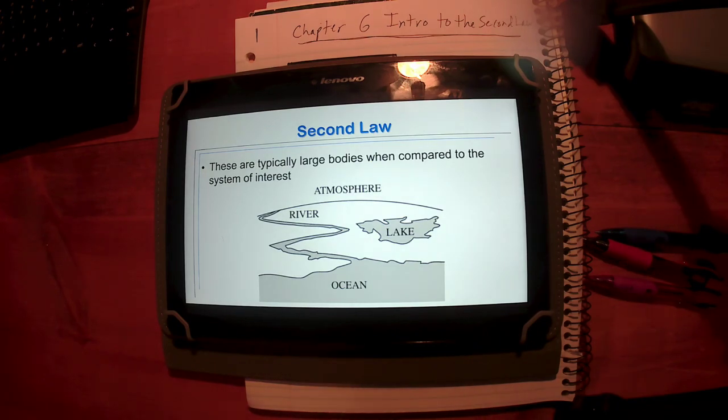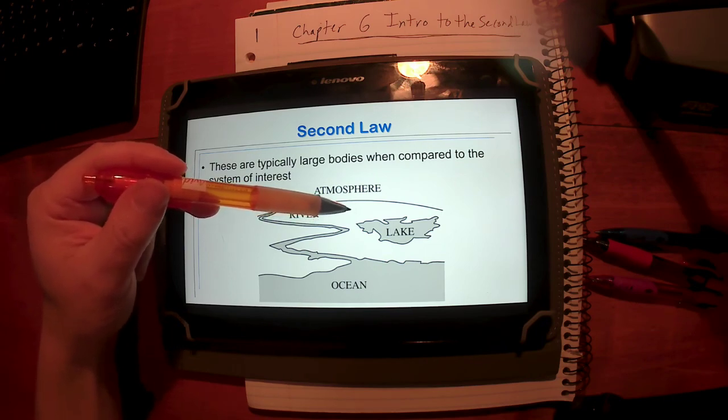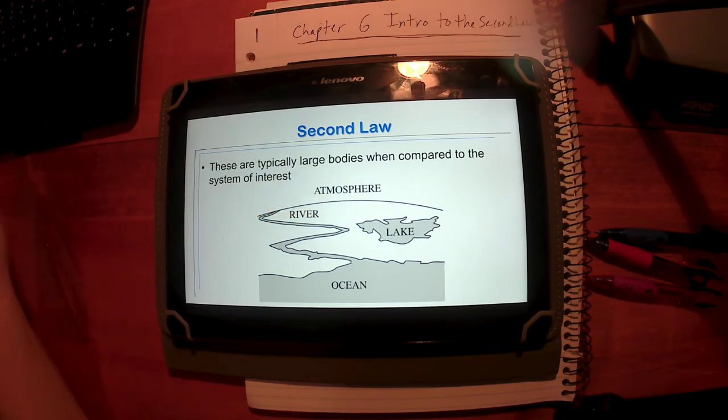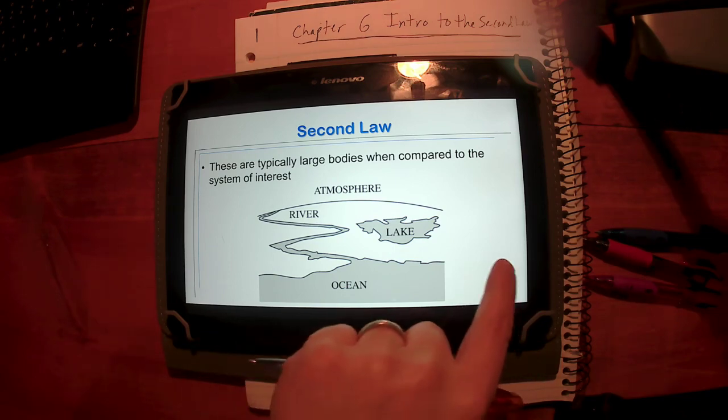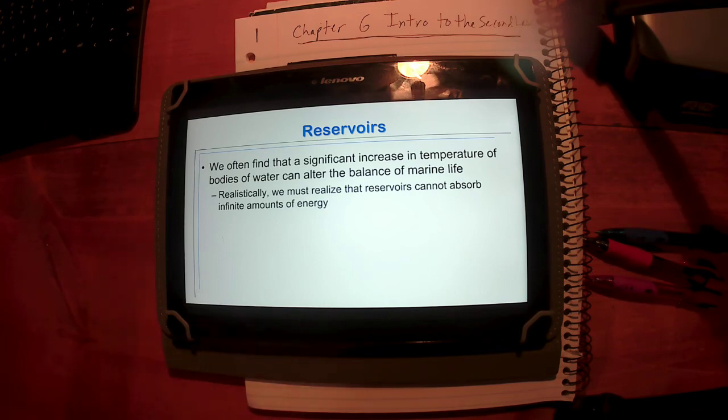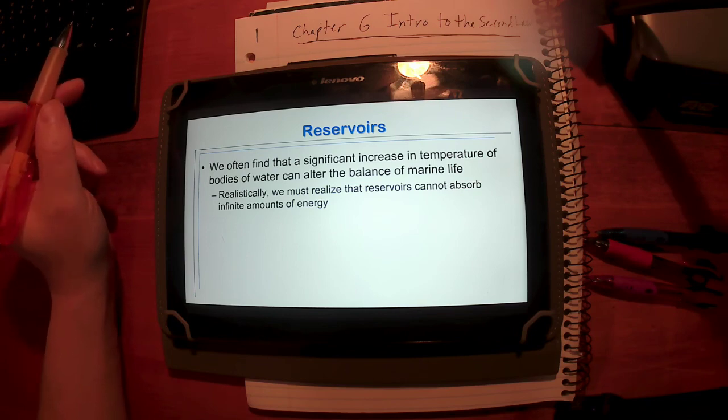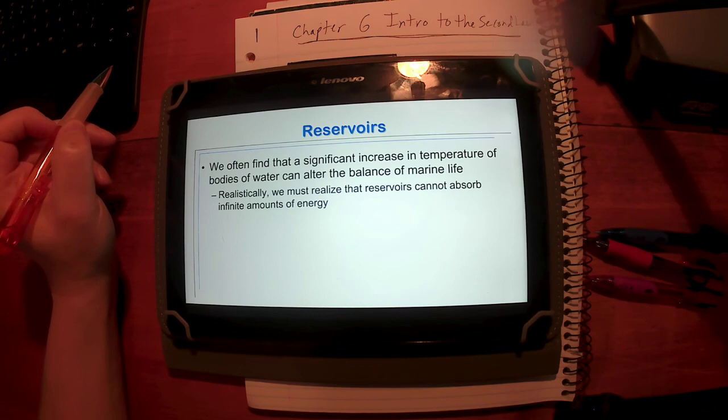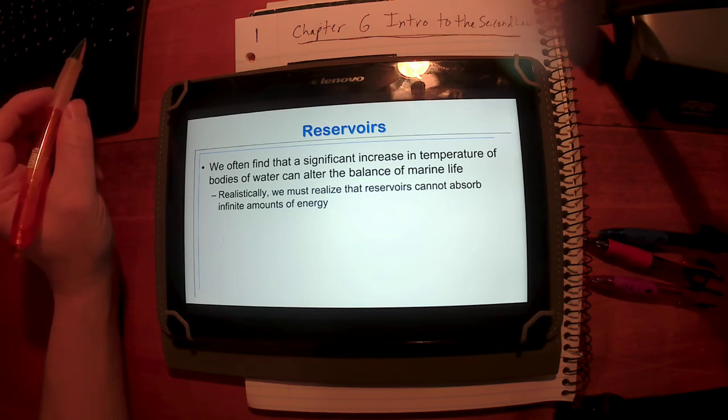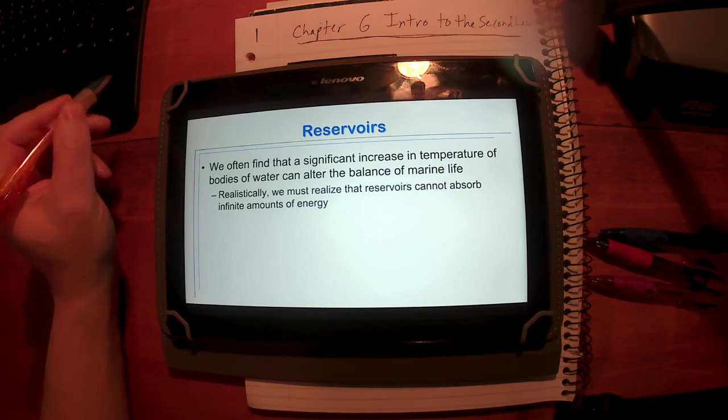Any object that we add heat to or remove heat from is going to experience a temperature change. The question is, is it a significant temperature change? Change is negligible. So for us, a reservoir is any object that we can add heat to or remove heat from with negligible effects. Typically these are very large bodies, something like the atmosphere, maybe a lake, maybe a river. So our system would be just a little speck right in here somewhere, not very big, not very much.